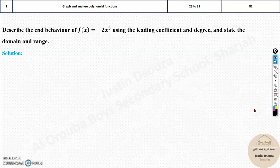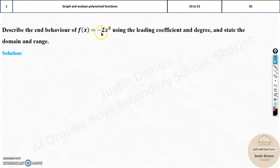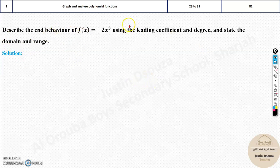The first topic is to graph and analyze polynomial functions. Here they have asked you to talk about the end behavior. They have given an equation that is negative 2x cubed. You need to find the leading coefficient, degree, and state the domain and range. It's pretty simple. It might be so many things, but this is the basics of overall graphing. You should know all these.